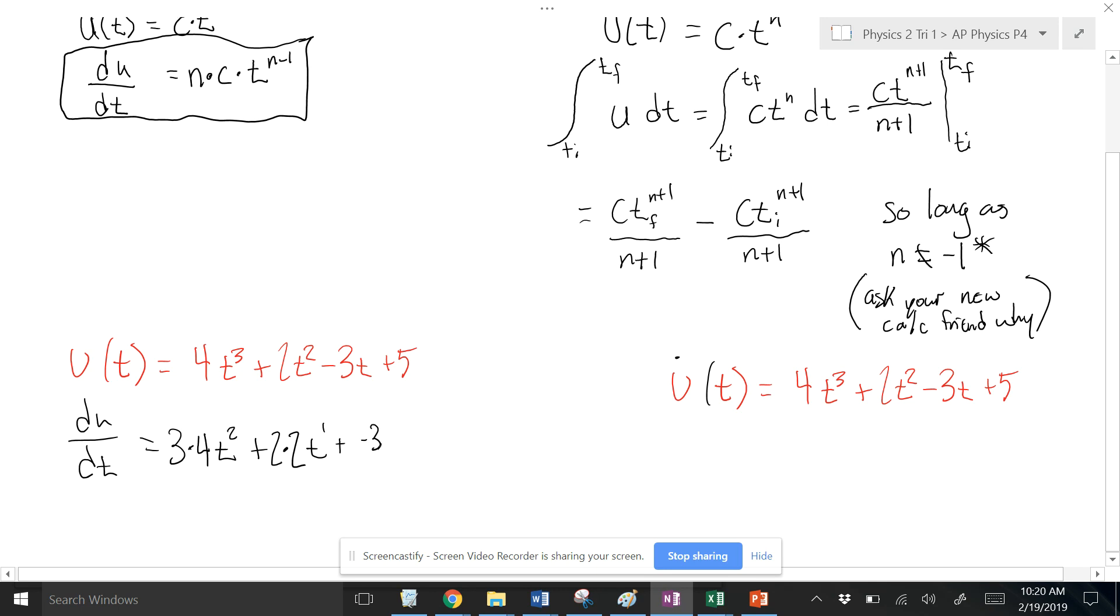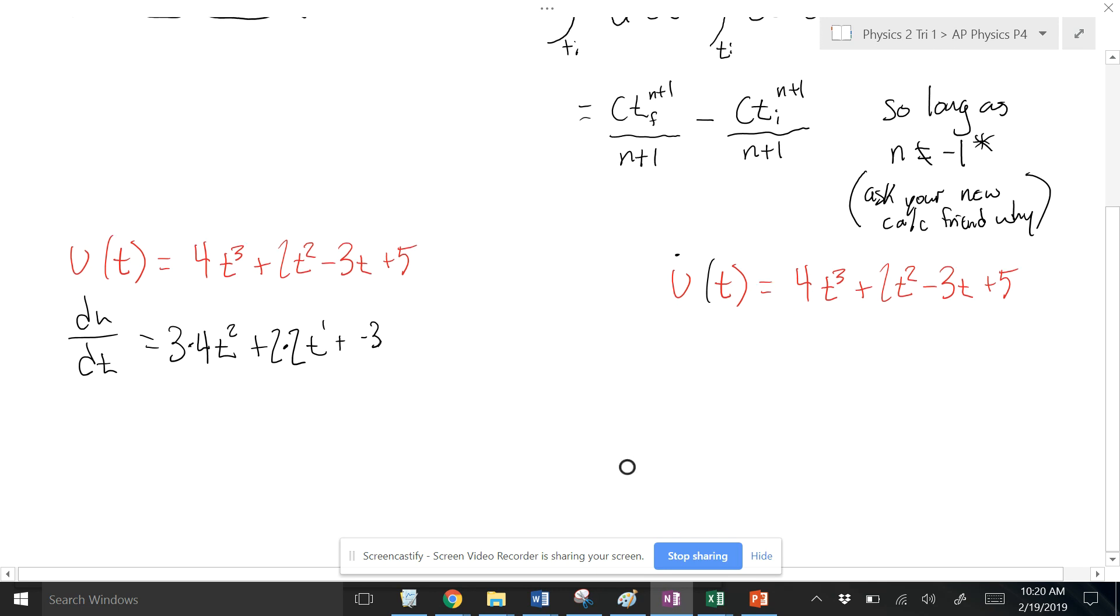So here we go. So I've got this thing, and if I wanted to be a little bit clearer, 3 times 4 is 12. So 12t squared plus 4t minus 3. That's what I would get there.